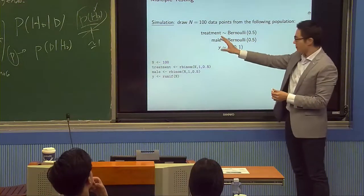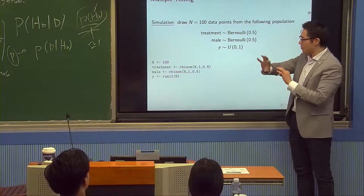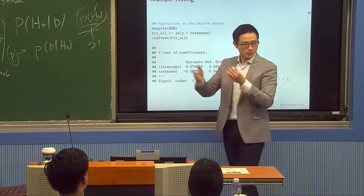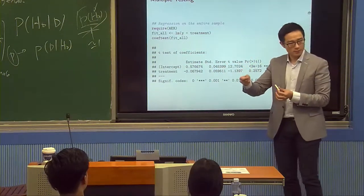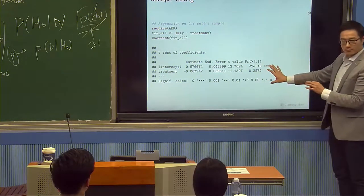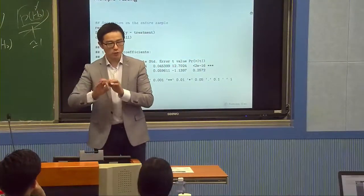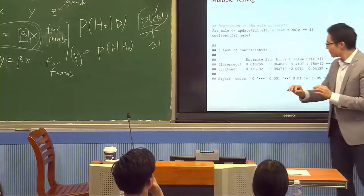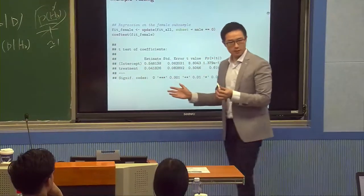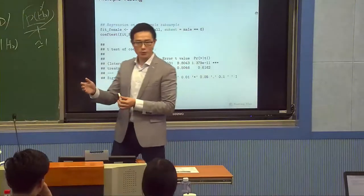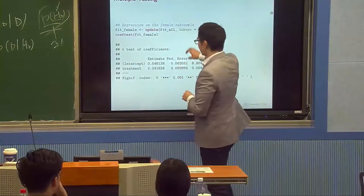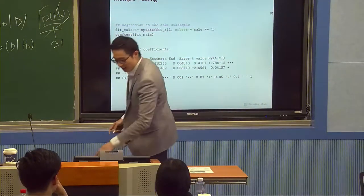When we generate the data, there's no true effect — everything is independent and beta is absolutely equal to zero. But just by chance, because we're working with finite samples, you will get a larger beta hat that's significant. That's the idea behind torturing the data. Now, you might say this strategy only works by luck. Let's see: if I do this strategy for 100 different times, how many times can I successfully find at least one significant result?